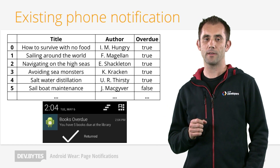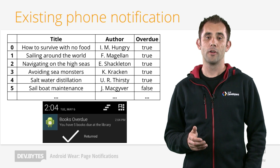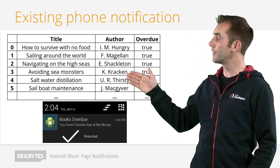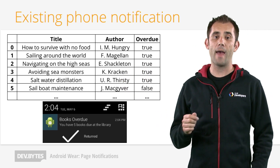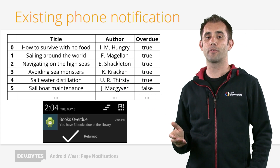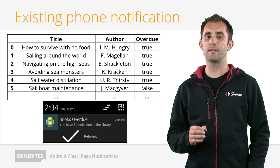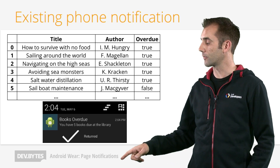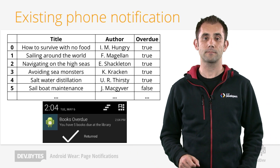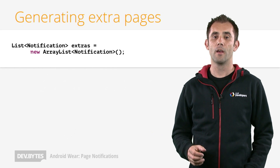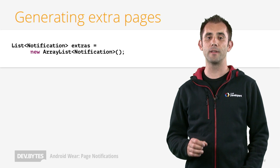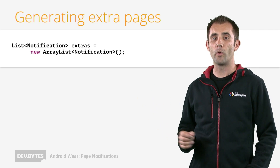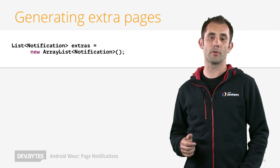So how do we go and implement all of this? For a phone application, your code will currently be traversing some kind of array or list of books within a loop like this, and then calculating how many are overdue from it. You're probably already doing this to generate the main notification you can see on the phone screenshot. To add extra pages, you modify your code to keep a list of extra notifications. Here, I've created an array list which we will use to store these for use later.